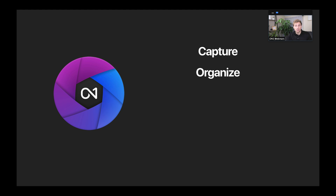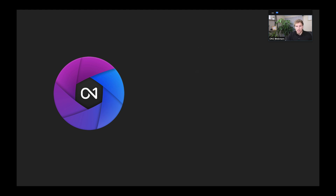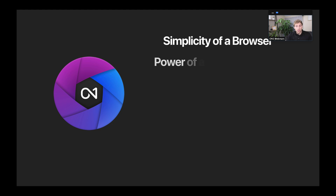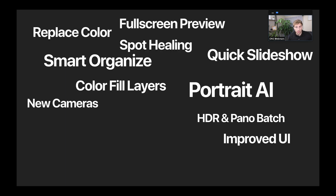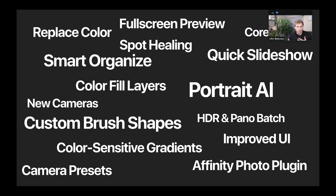ON1 Photo RAW 2021 is a powerful photo editing software that allows you to capture, organize, edit, enhance, and share your imagery. It combines the simplicity of a browser with the power of a raw processing engine, effects, and retouching section, all in a layered non-destructive workflow available on all of your devices. Today we're focusing on the landscape features — color range gradients, brush shapes, and dialing in your landscapes.